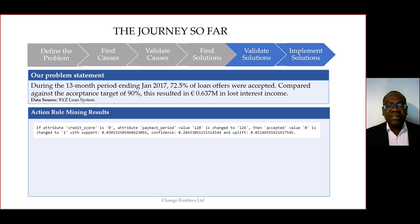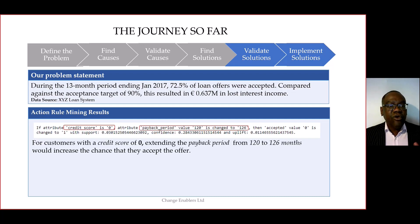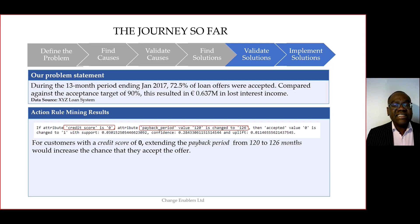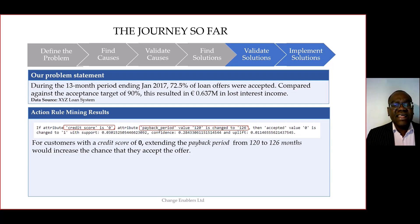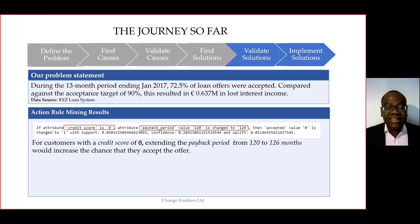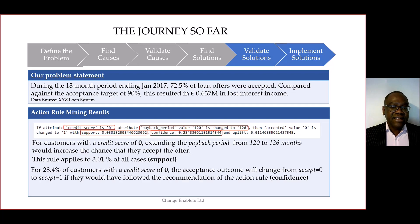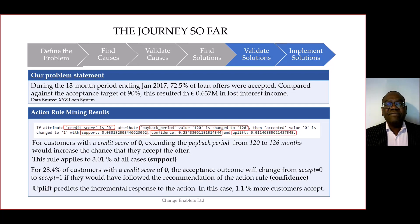That's one of the action rules on the screen, and it basically reads: for customers with a credit score of zero, extending their payback period from 120 to 126 months would increase the chances that they would accept the offer. We also quantified that action rule with the support, the confidence, and the uplift, as you can see on the screen.